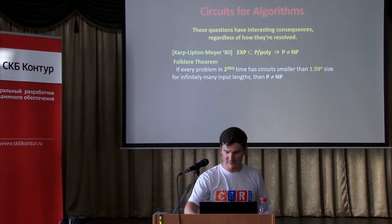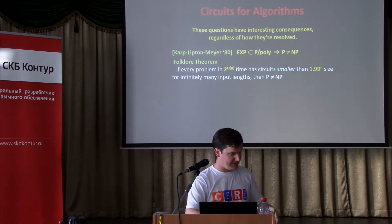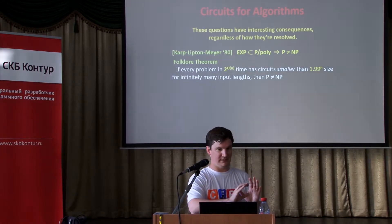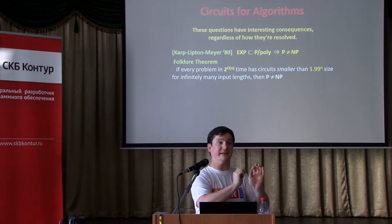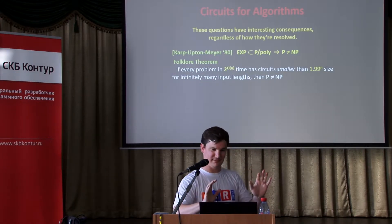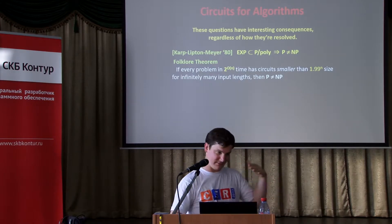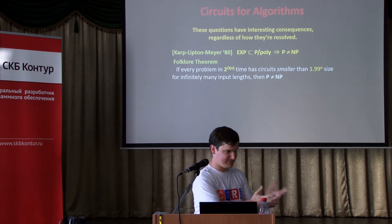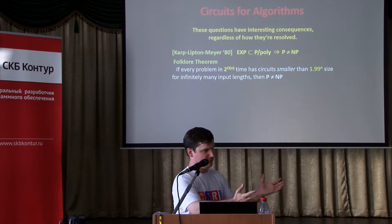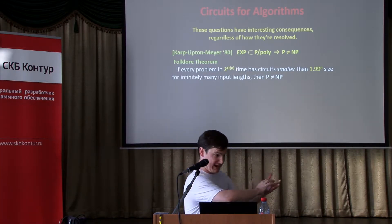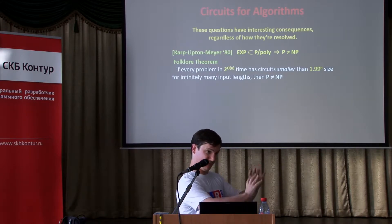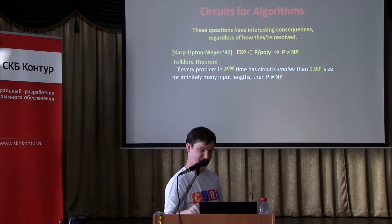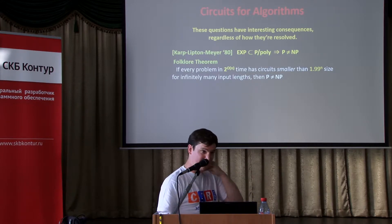You can say something a bit stronger, in fact. If every problem solvable in 2-to-the-order-n time has circuits smaller than 1.99-to-the-n in size, then P is different from NP. So basically, if you manage to get any tiny improvement over 2-to-the-order-n — say 1.99-to-the-n in the size of your circuits — you will still have resolved P versus NP.